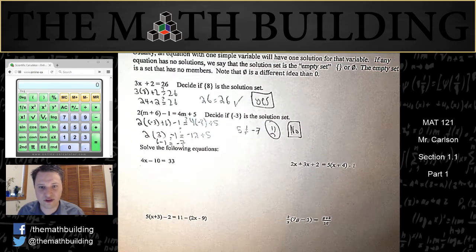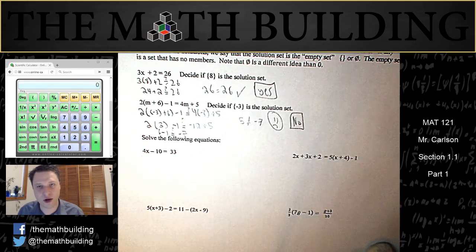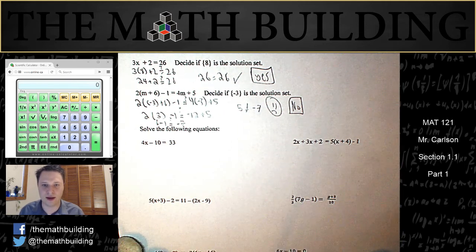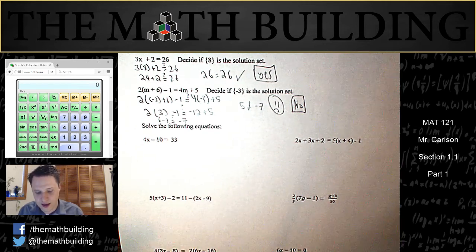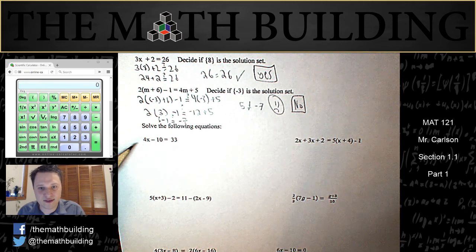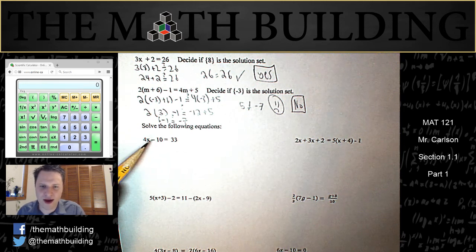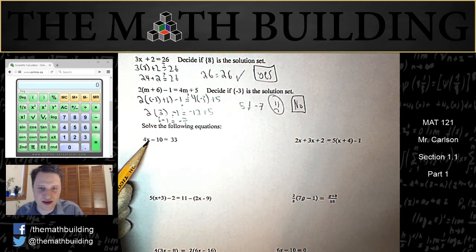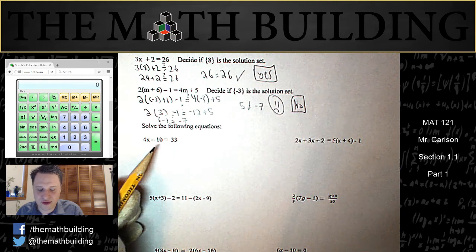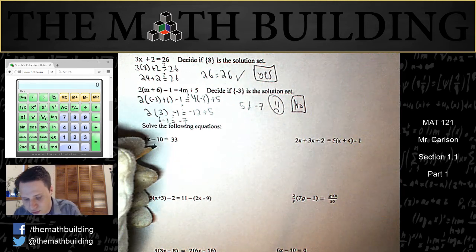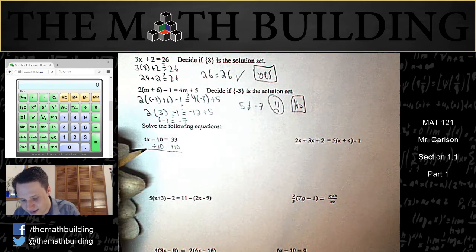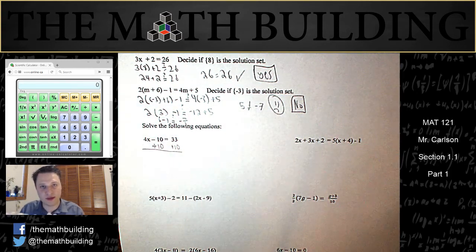Let's review solving basic equations so that we can know how to do this. This is perhaps the most important skill in algebra before calculus. Here we have the equation 4x minus 10 is equal to 33, and we want to know what value for x is going to make both sides of the equal sign match each other. The idea is to isolate the x variable. First, let's move this negative 10 over. It's subtracting, so we want to add 10, and we want to add 10 on both sides of the equal sign to keep the equation equal.